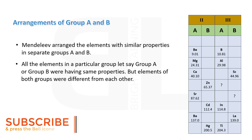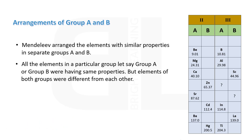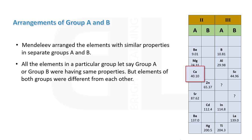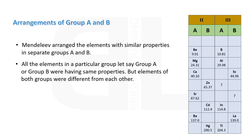Whenever he reached an element whose properties were not similar to the element before it — for example, he observed calcium and the next element zinc — the properties of zinc were not similar to those of calcium, and were neither similar to boron and aluminium. So Mendeleev placed zinc slightly to the right side of calcium in a separate group, group B. He did this for other elements as well.